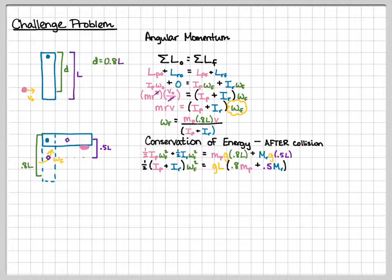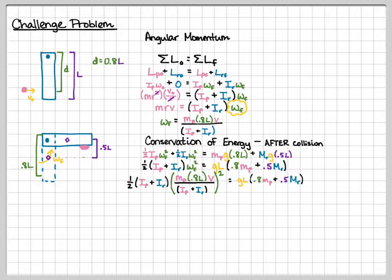So we're going to plug in omega final into our left hand side of the equation. So one half times the sum of my moments of inertia is M times 0.8 L times V times the sum of my moments of inertia. All of that squared, and that's equal to GL times 0.8 MP plus 0.5 MR. That right side hasn't changed. So when we look at the left side, we see that we have IP plus IR in the top and the bottom. So notice that one of them is squared. So we can get rid of one of the ones that's squared and that one that is on top. So when we do that, just make sure you remember that that top part, that MP times 0.8 L times V, that part is still squared.